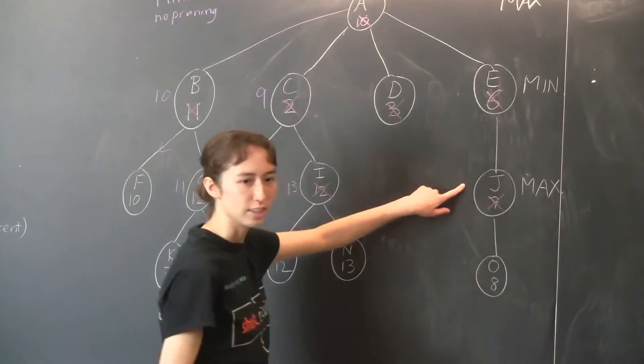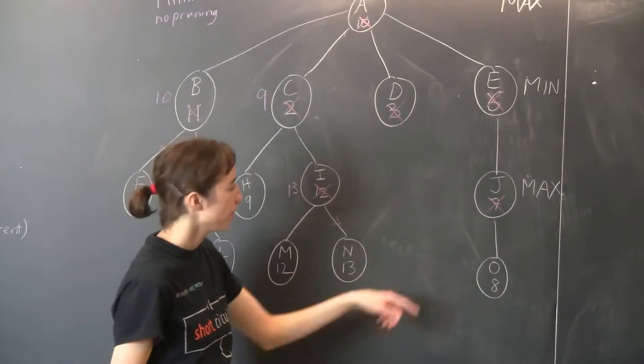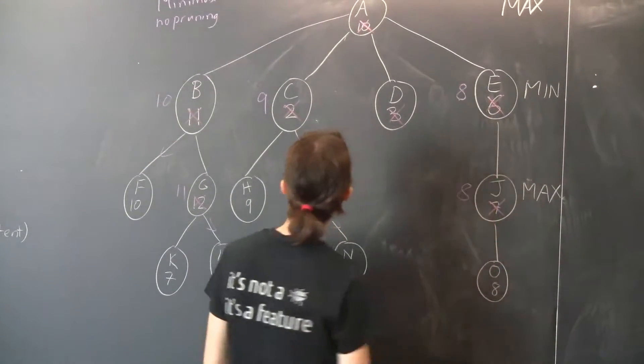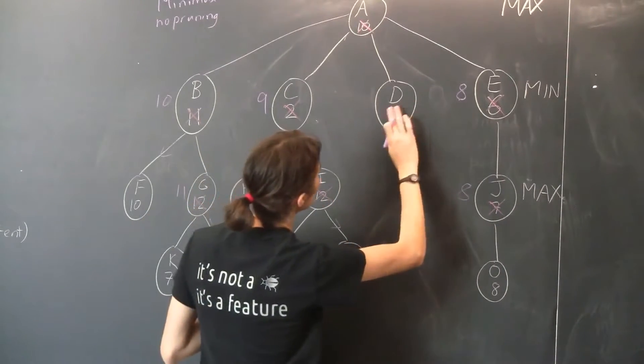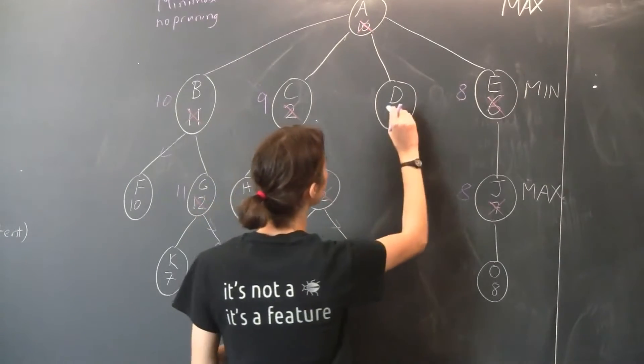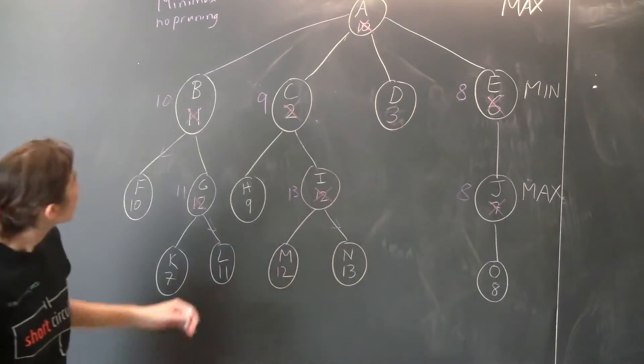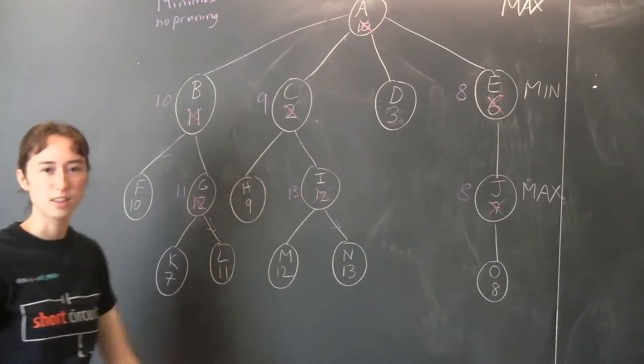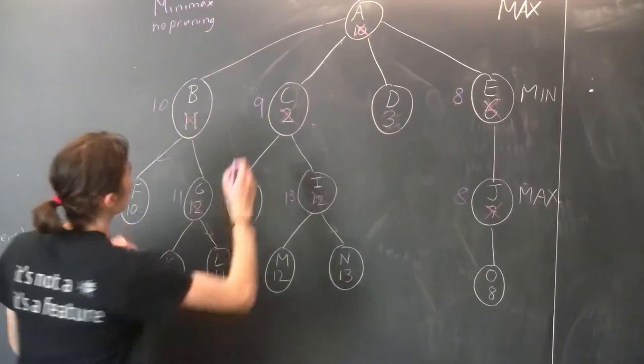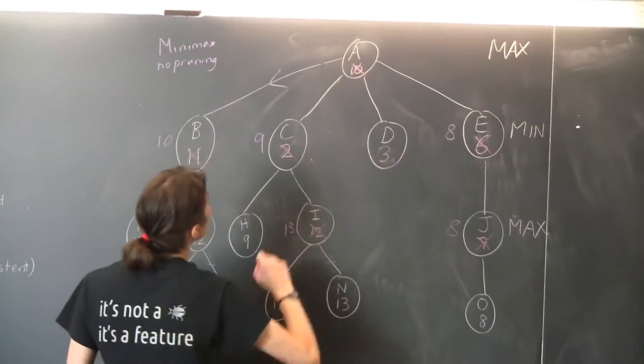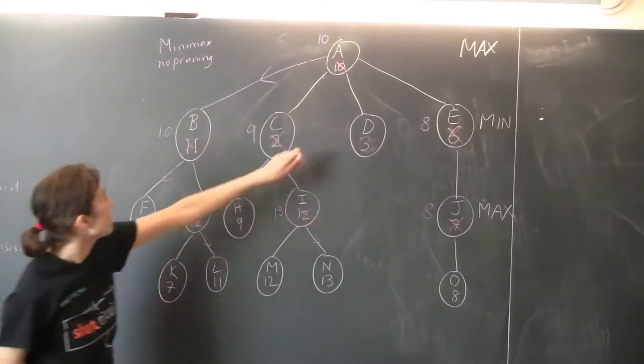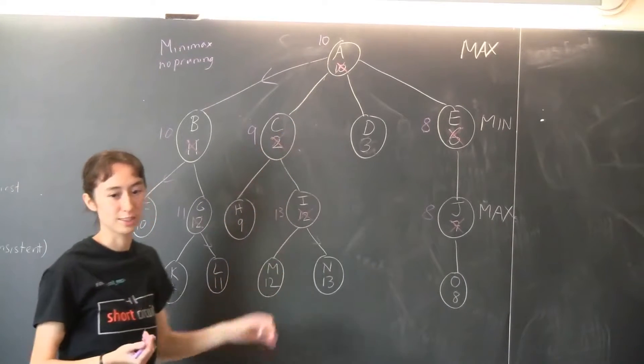And down here, what would max get at J? 8. There's no choice there. And so min would get 8 here, oh I guess this 3 is still here, I believe. Okay, so now we can answer the question, what would Max get at the top? 10, because Max wants the biggest score. So Max would get a score of 10 there, which coincidentally is the same as the heuristic value, but that's just a coincidence.